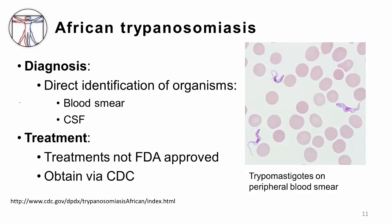Diagnosis is usually made by direct identification of organisms on a blood smear — here you can see trypomastigotes in the blood of a patient with African trypanosomiasis. These can also be identified in cerebrospinal fluid at later stages. Treatments are mostly not FDA-approved medications and must be obtained by special approval from the CDC; they tend to be very toxic.